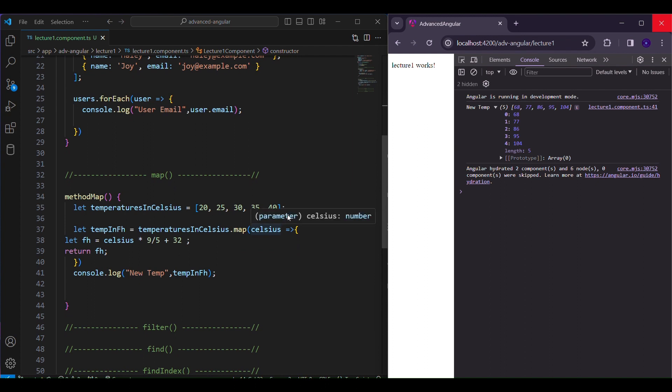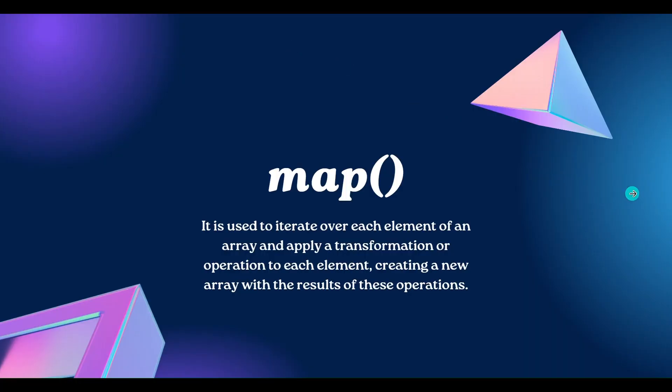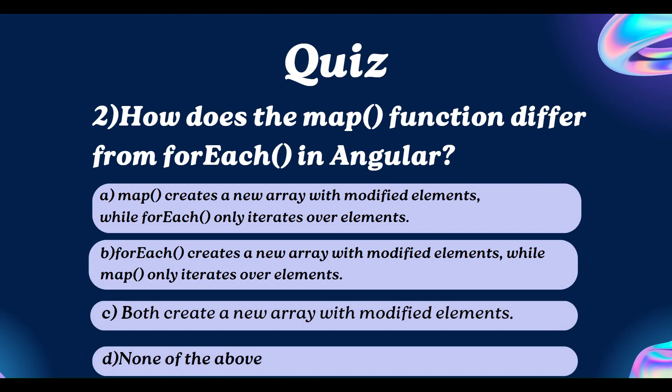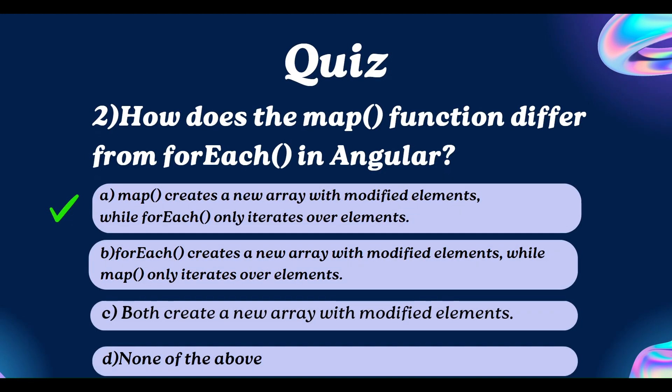Let's have a look at the quiz. How does the map function differ from forEach in Angular? Comment down your answer by pausing the video. Map creates a new array with modified elements, while forEach only iterates over the elements that are present in an array.